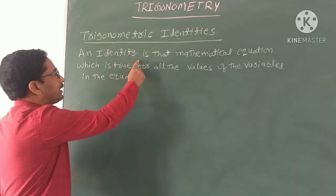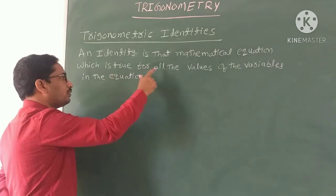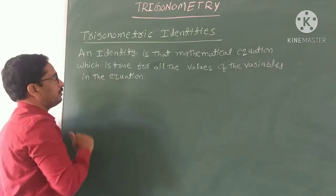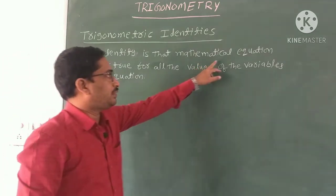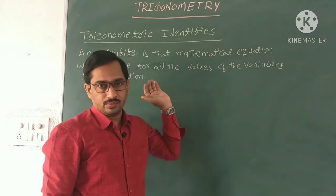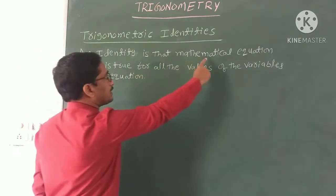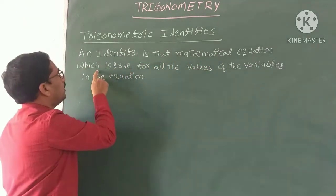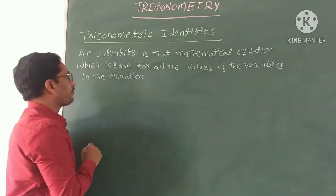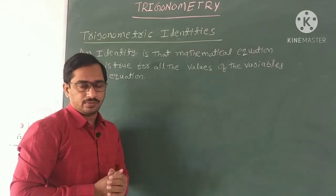An identity is a mathematical equation which is true for all the values of the variables in the equation. Meaning, if a mathematical equation contains variables, it is satisfied by all values of those variables. It is true for all variables. In Trigonometry we have three identities — let's see them one by one.